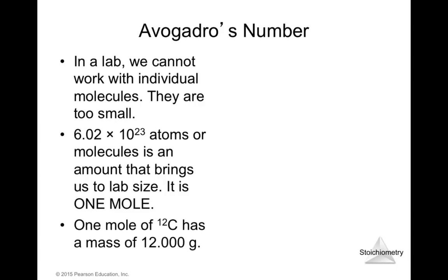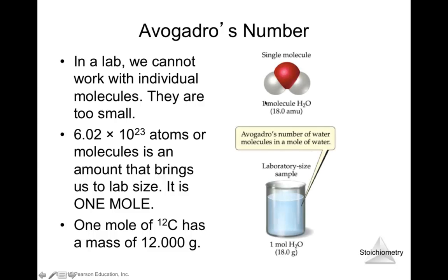One mole of carbon has a mass of 12.00 grams. One mole of water has a mass of 18.0 grams. The Avogadro's number represents this amount: for 6.02 × 10²³ molecules of water, the mass is 18.0 grams. So for one mole of water, that amount of molecules has a mass of 18.0 grams.